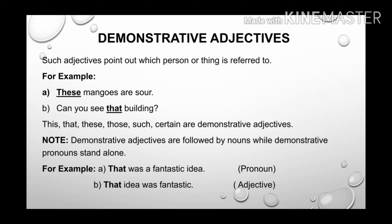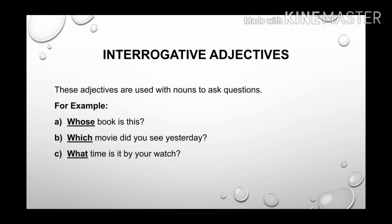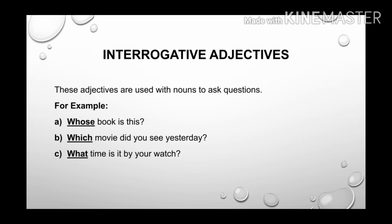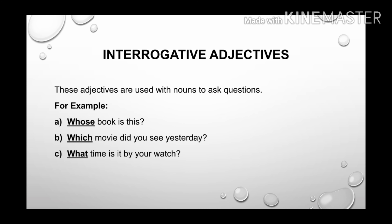So this is the difference between demonstrative pronoun and demonstrative adjective. Our next kind of adjective is interrogative adjectives. As the word interrogative suggests, it means questions — these adjectives are used with nouns to ask questions. For example: Whose book is this? Here whose is the interrogative adjective as it is asking a question and is followed by the noun book. Which movie did you see yesterday? Here which is the interrogative adjective. What time is it by your watch? Here what is the interrogative adjective.